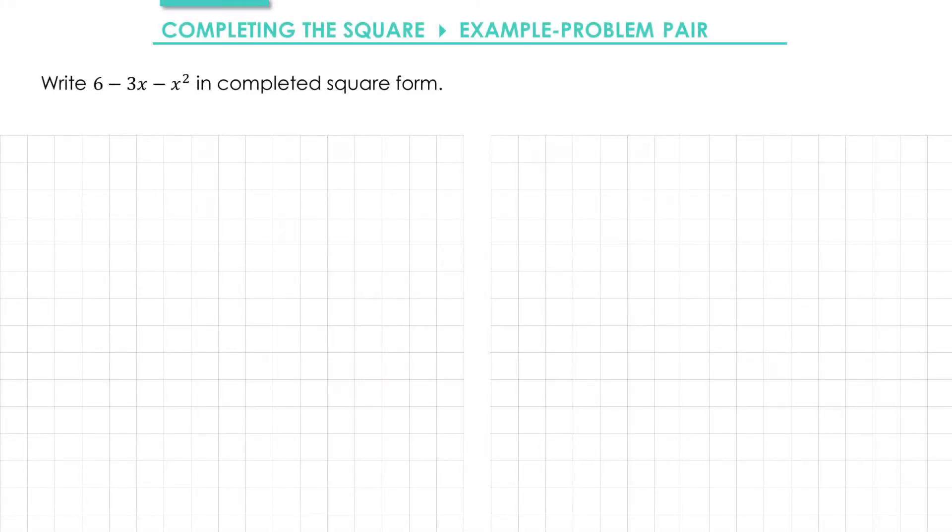OK, in this example we need to write 6 minus 3x minus x squared in completed square form. The difference here from the last example is that we've got a negative x squared term.